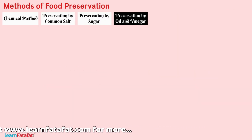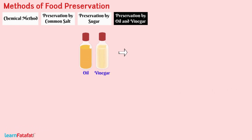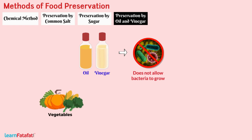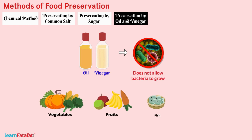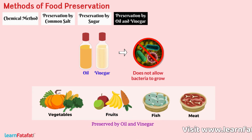Preservation by oil and vinegar. Oil and vinegar do not allow bacteria to grow. Vegetables, fruits, fish and meat are preserved by this method.